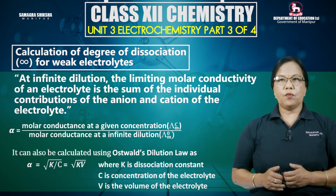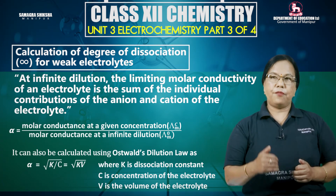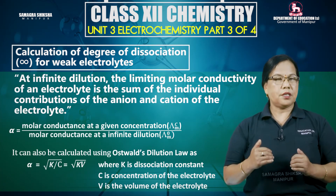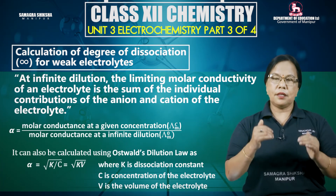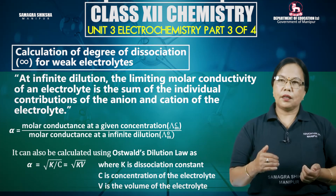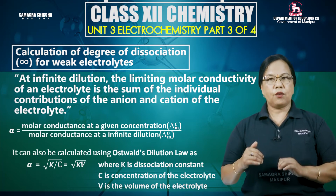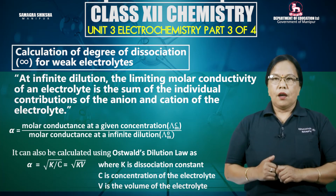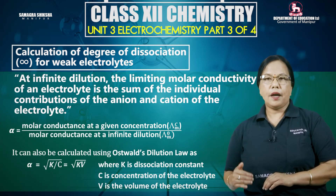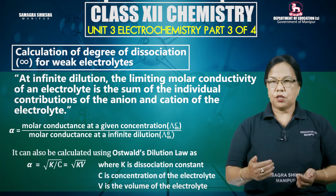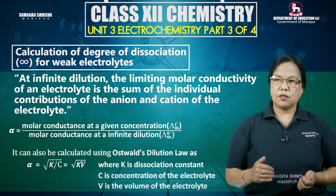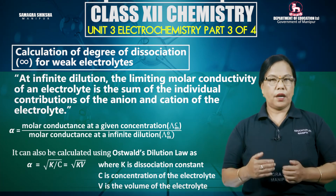Calculation of degree of dissociation alpha for a weak electrolyte: the degree of dissociation alpha is the ratio of molar conductance at a given concentration, lambda c m, divided by molar conductance at infinite dilution, lambda naught m. The dissociation constant Ka equals alpha squared c divided by 1 minus alpha, where c is the concentration of the electrolyte.